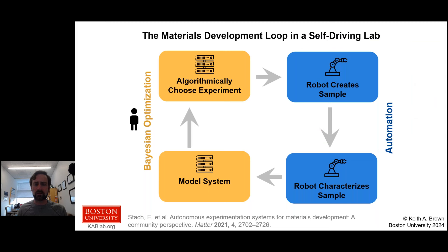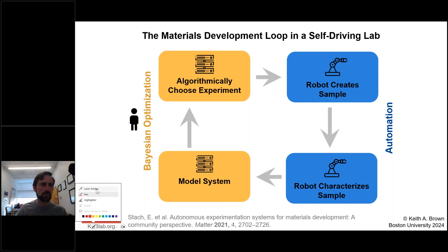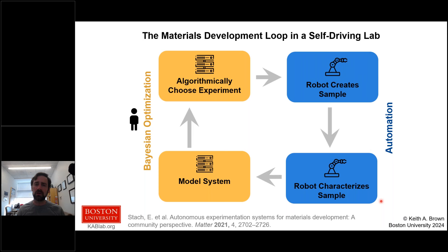Why does this matter? We face vast global challenges — clean water, clean energy — and to solve these we need new materials. But the material space is insurmountably large, with more possible materials than atoms in the observable universe. We need to take the traditionally lethargic research process and accelerate it. My group studies self-driving labs to accelerate both making/characterizing samples using robotics and choosing experiments algorithmically.